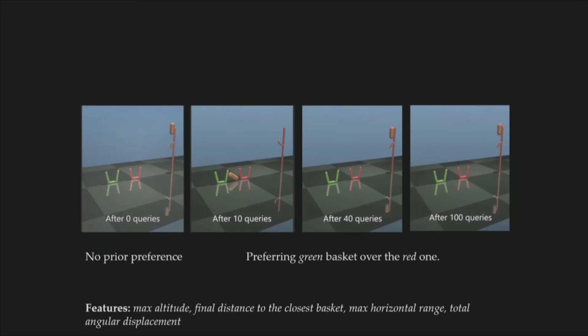And we did the same analysis on the tosser task. As you can see, without any prior information, the robot doesn't know what to do, so it doesn't even throw the ball. After 10 queries, it learns throwing the ball. And the good thing about this environment is that there are two baskets. They represent different preferences. So after 40 queries, it learns throwing it far away because the human prefers the green basket. And after 100, it successfully throws the ball into the basket.